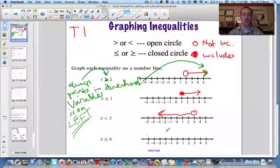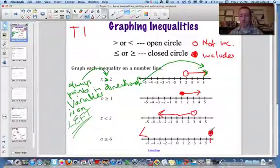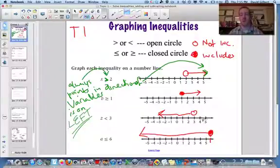A is less than or equal to 6. The variable's on the left, so you already know it's going to point this way. Okay, so 6 would be here. Close circle, so we include 6. And it points that way.